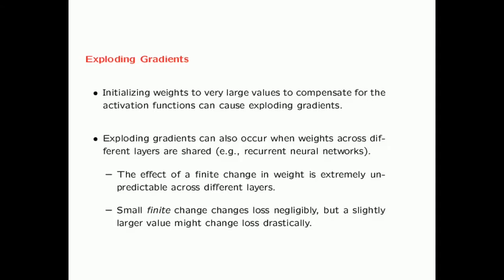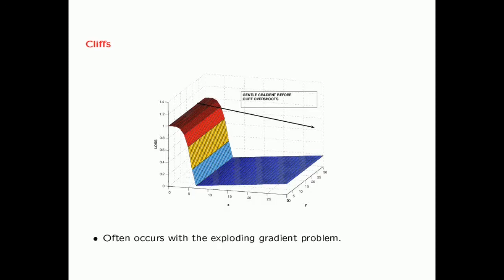Exploding gradients also occur in some interesting settings where the weights across different layers are shared. In recurrent neural networks, because the weights across different layers are shared, the effect of a finite change in the weight when you perform the gradient descent step is extremely unpredictable across different layers. If you make a small change in the weight, the loss might change negligibly. But if you increase it slightly more, suddenly the loss might change drastically. This type of topology is referred to as a cliff.